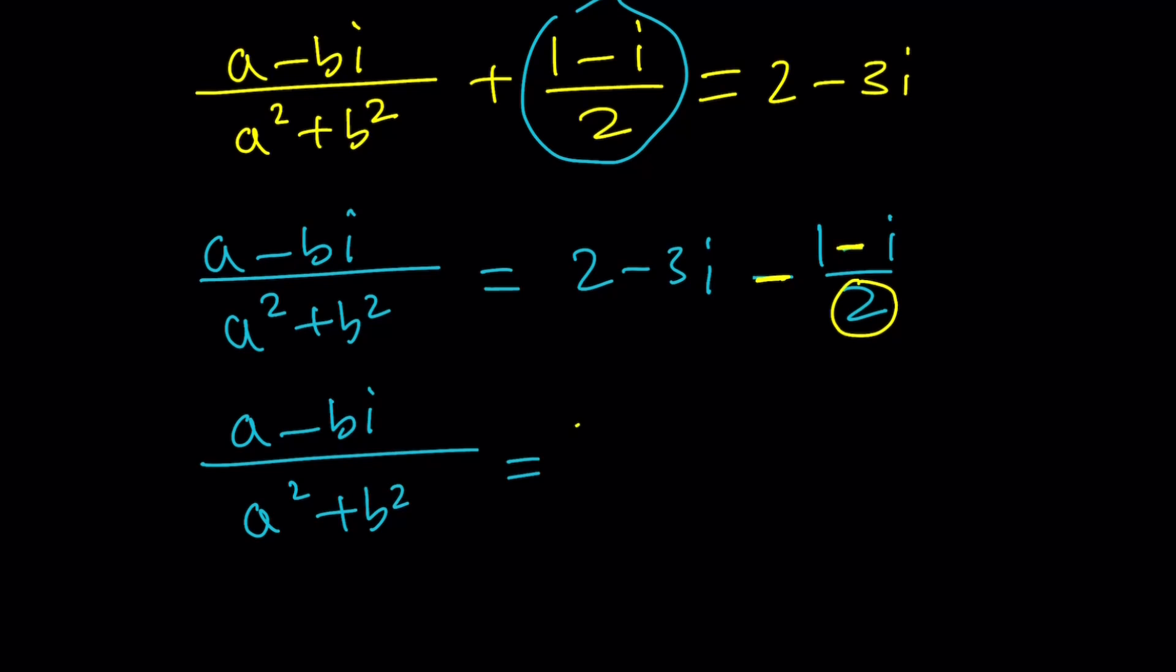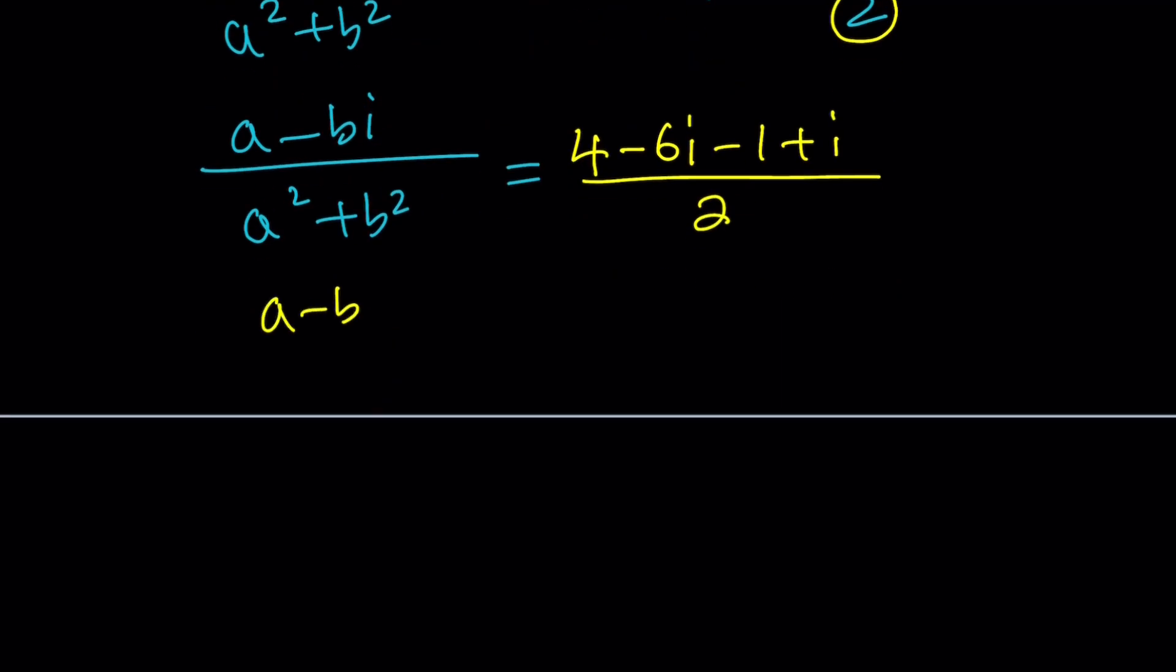So we'll get 4 minus 6I minus 1 plus I divided by 2, and then we can simplify this. A minus BI divided by A squared plus B squared equals 4 minus 1 is 3, negative 6 plus 1 is negative 5. Now would it be safe to assume that A squared plus B squared equals 2 and A minus BI equals 3 minus 5I? As long as that works, yes.